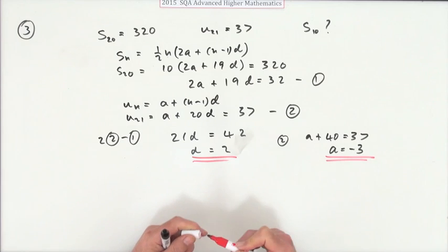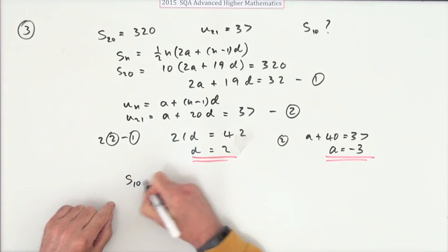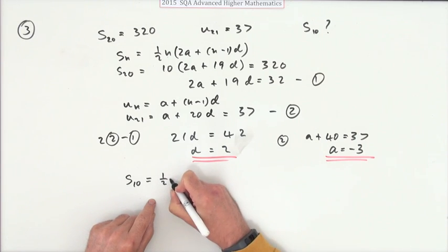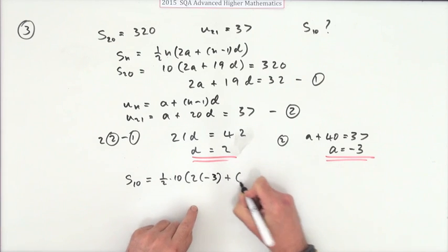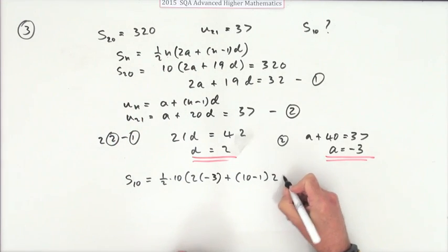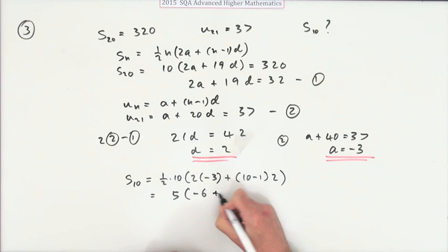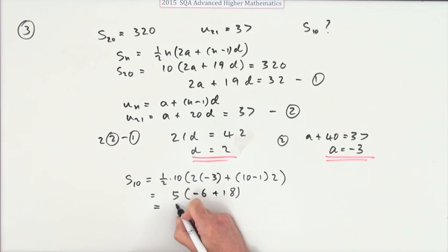Right, there we go. That's what generates this arithmetic series. So what do we want? We want S₁₀. Well, S₁₀ will be a half of 10 times 2 times negative 3 plus 10 minus 1, just using the formula, times 2. So that's 5 times negative 6 plus 18. That's 12. 5 twelves are 60. There's your answer.